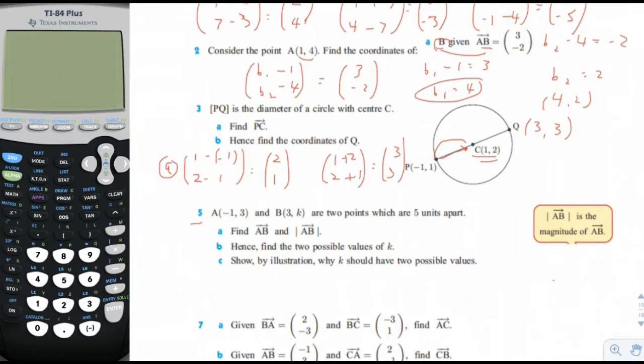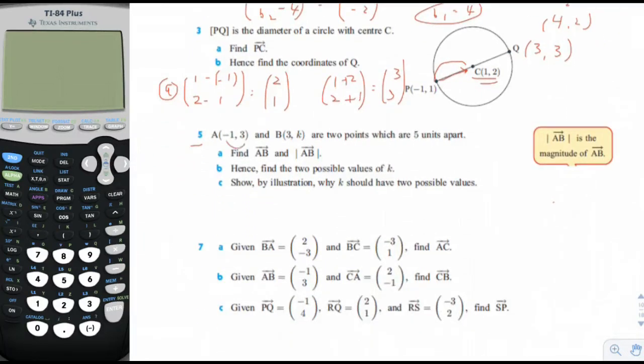Problem 5. The coordinates for A are negative 1 and 3, and the coordinates for B are 3, K. And they're 2 points which are 5 units apart. That means that if we find the vector AB, it would look like this: 3 minus negative 1 and K minus 3. That would be the vector AB. So let's simplify that. 3 minus negative 1 is 4. K minus 3 is just K minus 3. And then I'm going to find the length of that.